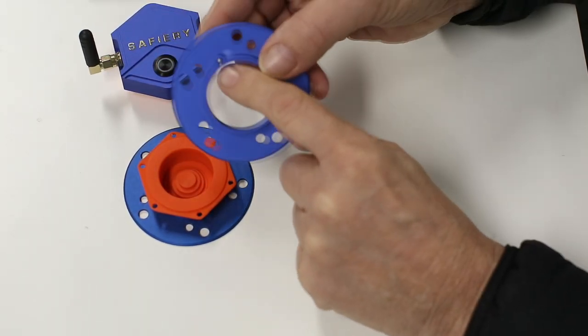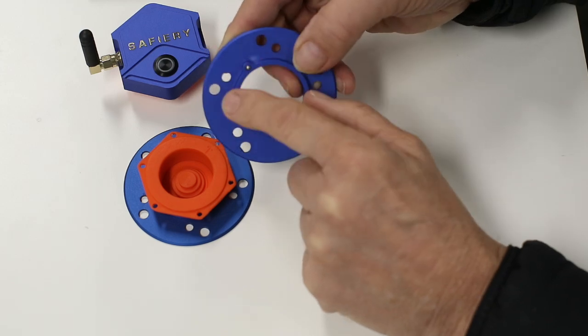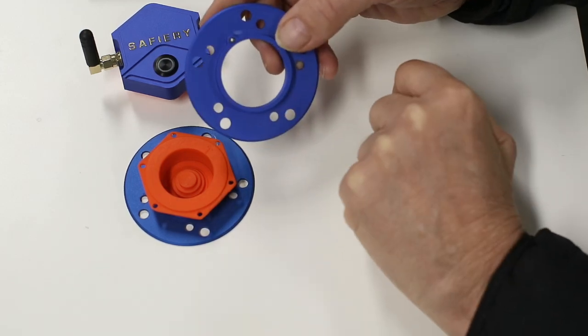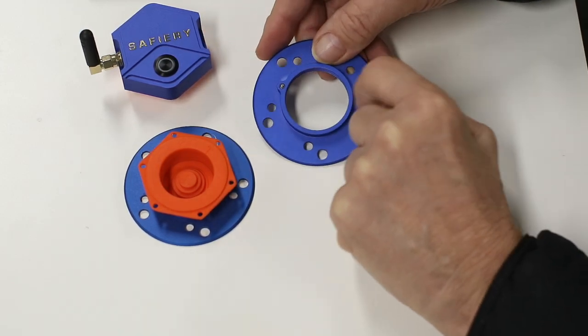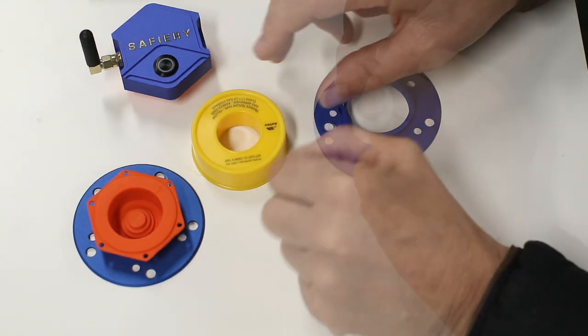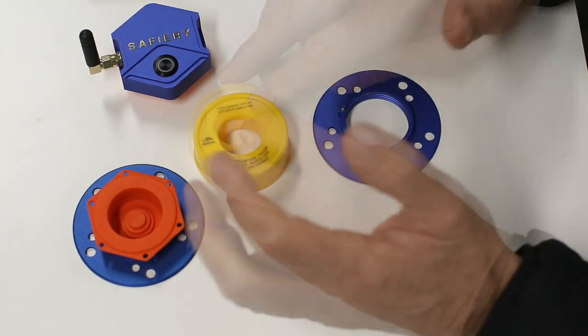When it goes down, it locks with that little ball bearing at the top to make sure it won't come unthreaded with vibration. Here's the actual thread tape—it's gas-approved. The yellow one gives the best possible seal against gases.